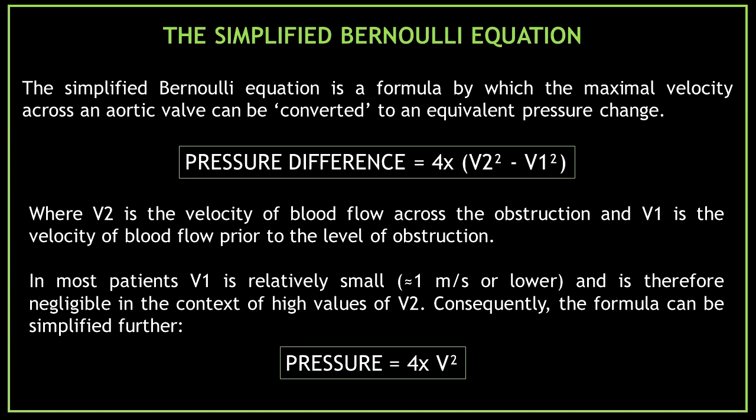To obtain the aortic valve gradients we use the simplified Bernoulli equation. The simplified Bernoulli equation is a formula by which the maximal velocity across an aortic valve can be converted to an equivalent pressure change. In the formula, V2 is the velocity of blood flow across the obstruction and V1 is the velocity of blood flow prior to the level of obstruction. In most patients V1 is relatively small, so the formula can be simplified further.